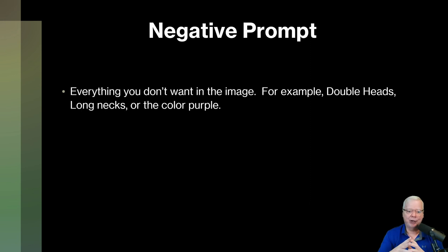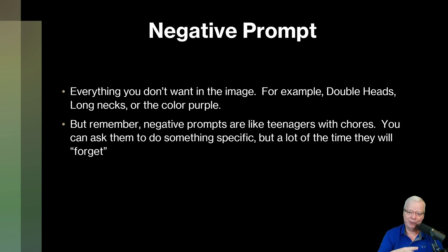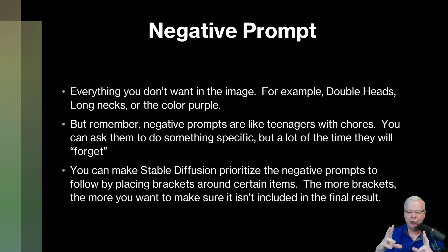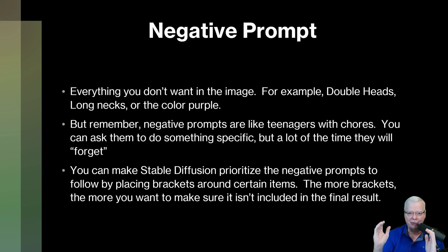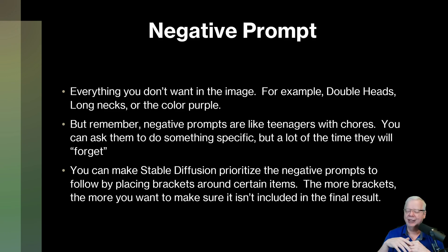Next, you have negative prompts — basically everything you don't want in an image. For example, double heads, long necks, or the color purple. But remember, negative prompts are like teenagers with chores: you can tell them to do something specific, but they might just forget. You want to encourage Stable Diffusion to remember certain prompts by putting brackets or weights on a negative term. If you have a negative term of 'double heads' and really don't want double heads, put a parenthesis or bracket on either side, then the words and a weight — ranging from 1 (normal) to 2 (highest importance). Keep weights around 1.3 to 1.6, and Stable Diffusion will assign higher priority to those negative prompts.